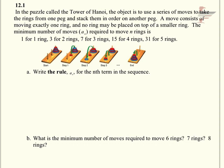Part a says to write a rule a_n for the nth term of the sequence. So I'm going to write out and summarize what we have thus far.